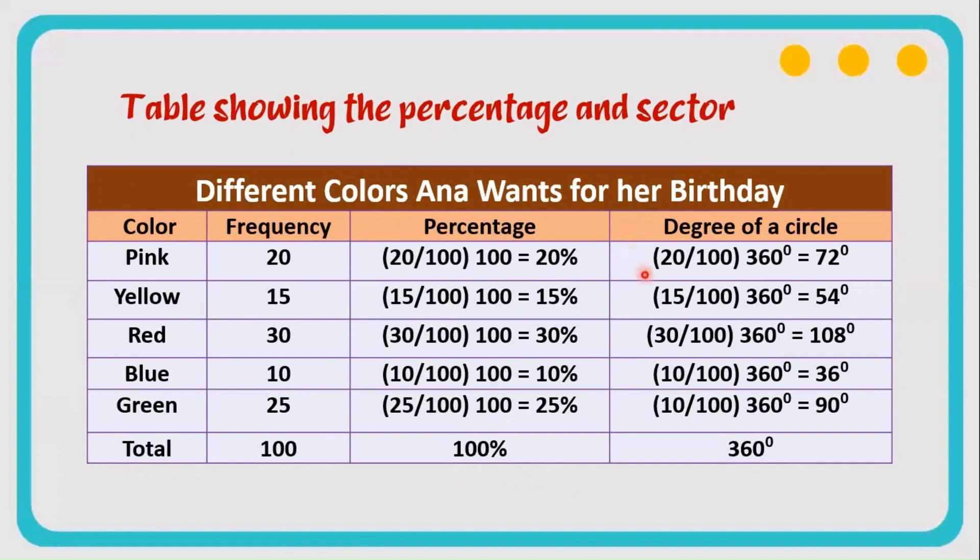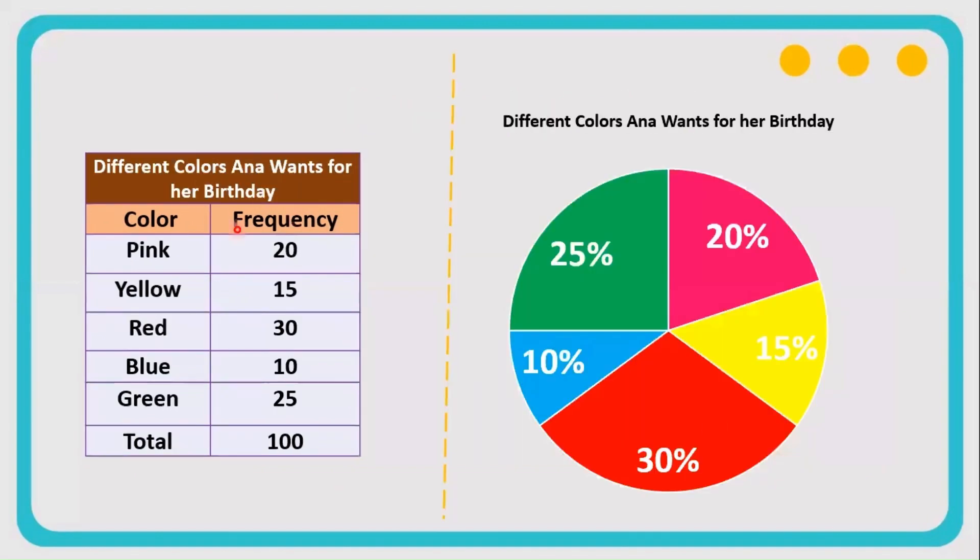We have here again the formula. We need to get the frequency divided by 100 times 360, so that is equal to 72. Follow the formula until all of the colors are given exact degree measures. Be sure the total is 360 degrees. So now our pie graph looks like this. We have here the different colors Anna wants for her birthday.